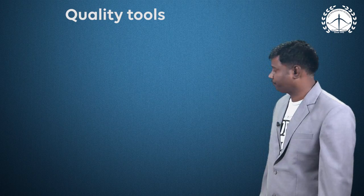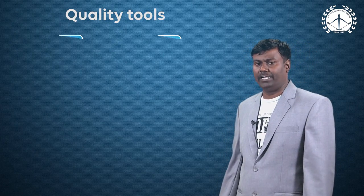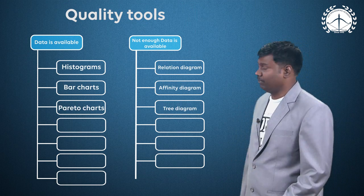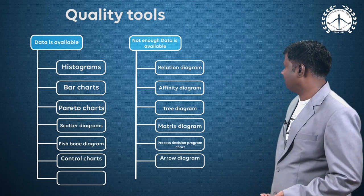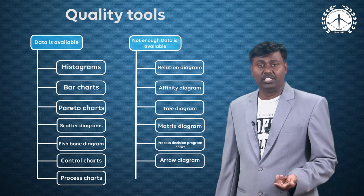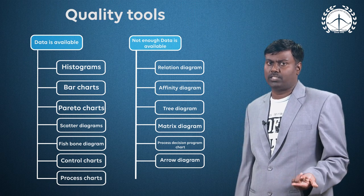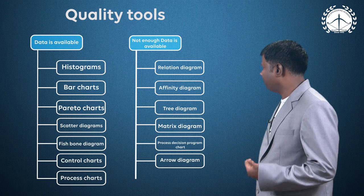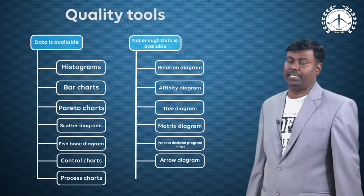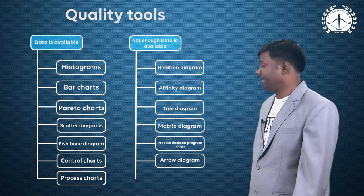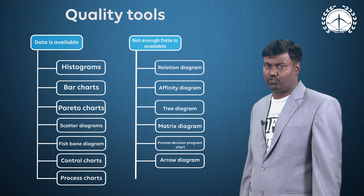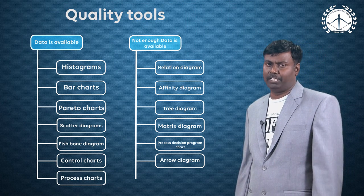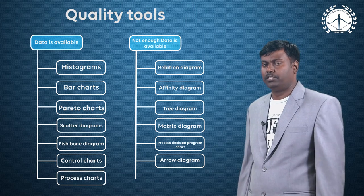Quality tools are broadly in two categories: when data is available and when data is not available. When data is available, tools include bar graphs, histograms, pie charts, Pareto charts, scatter diagrams, fishbone/cause-and-effect diagrams, control charts, and process charts. When not enough data is available, tools include relationship diagrams, affinity diagrams, tree diagrams, matrix diagrams (useful in QFD), process decision charts, and arrow diagrams. Arrow diagrams are part of network diagrams used in project management.